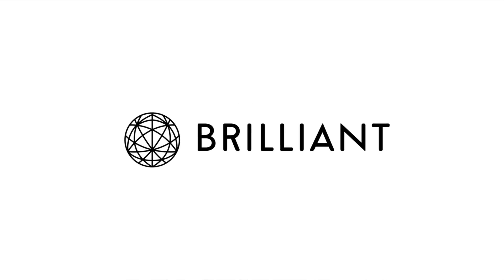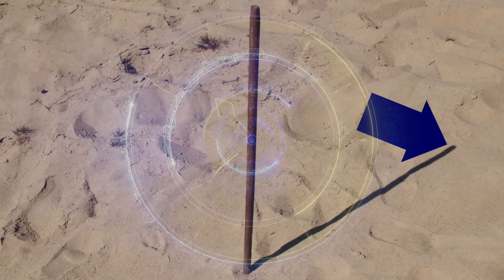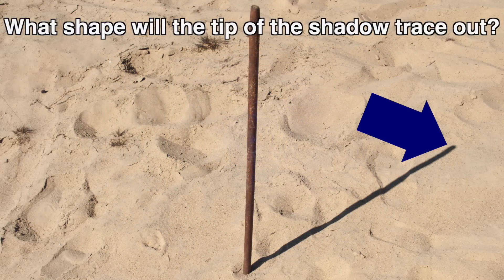This video is sponsored by Brilliant. If you go outside and plant a stick in the ground, we'll assume a flat ground locally, and then trace the tip of the shadow throughout the day, what shape will it make?